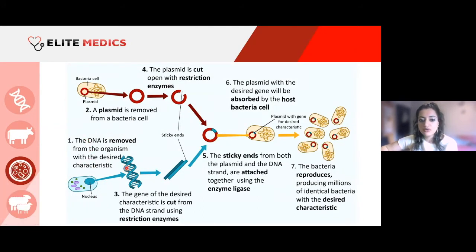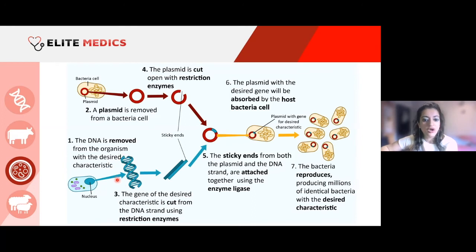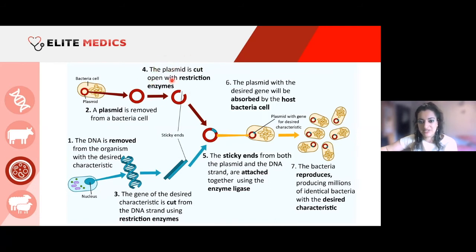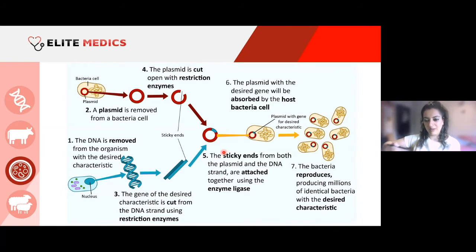First, DNA is removed from the organism with the desired characteristic — say we're looking for hazel eye colour, we find the gene that carries it. We cut out that gene using restriction enzymes. Then we take a plasmid from a bacterial cell and cut it open with restriction enzymes, creating space. Now we have a plasmid with space and a desired gene, and we stick them together with ligase enzymes.